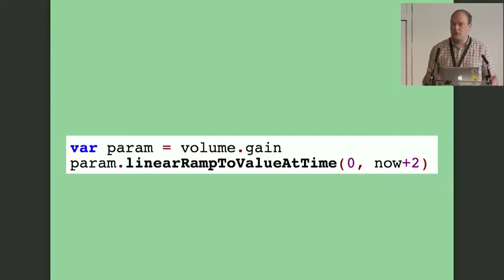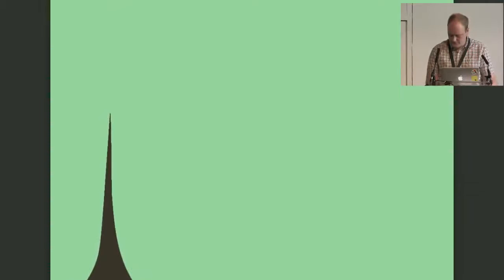If you want to change the volume of the sound, we can automate that in the same way — automate the gain parameter and have it decay away to zero over two seconds. If we connect those two parameter automations and map them to the mouse pointer, we can make something that sounds a bit like a theremin. As I go up and down, I change the pitch, and moving in and out changes the volume.